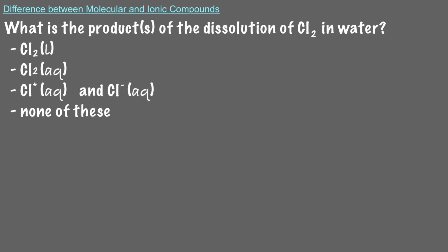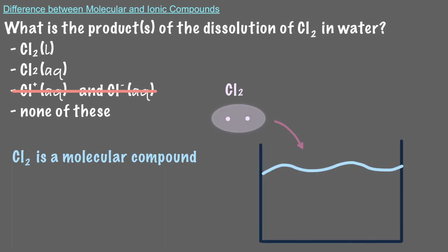Let's try a few examples. What is the product or products of the dissolution of Cl2 in water? Cl2 is made up of two nonmetals, so it's a molecular compound. Therefore, it does not dissociate in water. When dissolved in water, Cl2 makes aqueous Cl2, though for the sake of transparency, Cl2 is not very soluble in water.